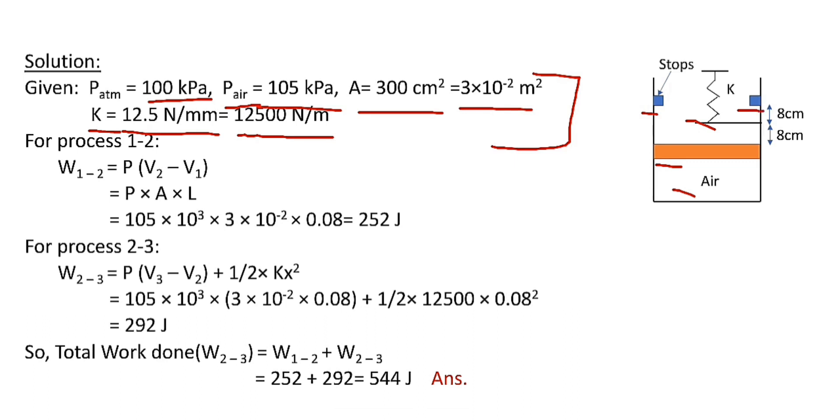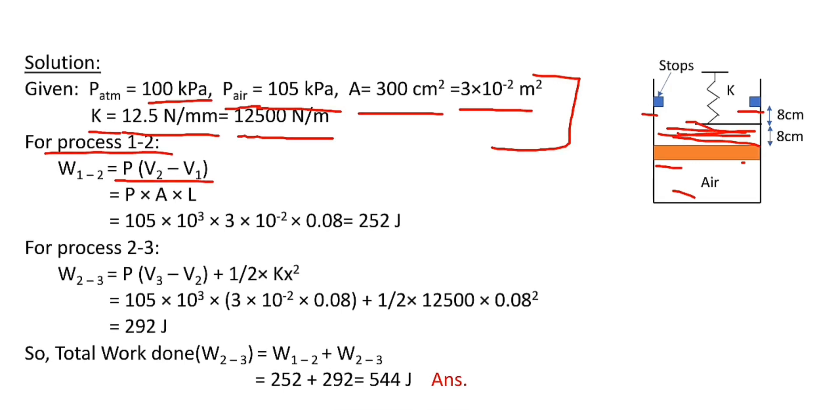For process 1 to 2, work equals P(V₂ - V₁). The volume difference V₂ - V₁ equals the area of piston times this length. So W₁₋₂ becomes pressure times A times L.